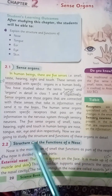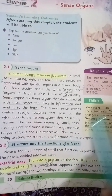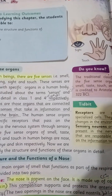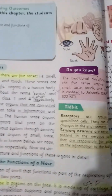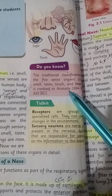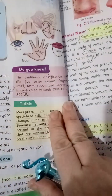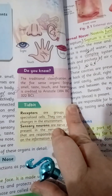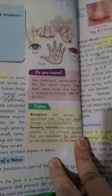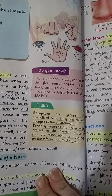Now we are going to study the structure and function of these organs in detail — sight, smell, taste, touch, and hearing. The concept of the five senses is credited to Aristotle. Receptors are a group of specialized cells which detect and can detect changes in the environment.